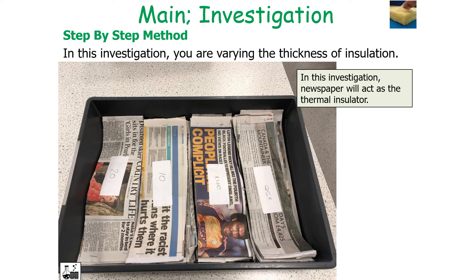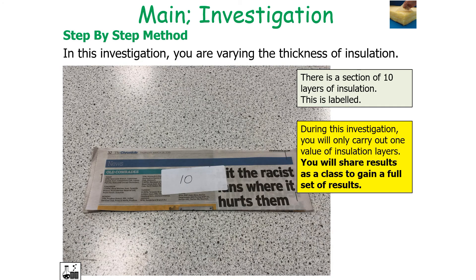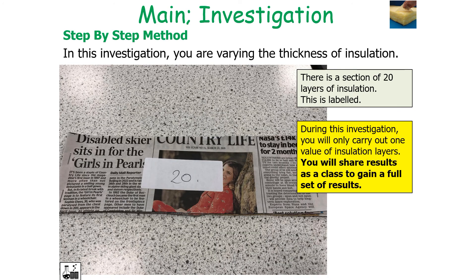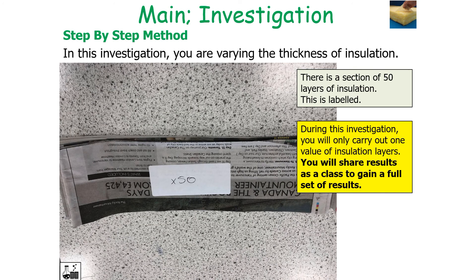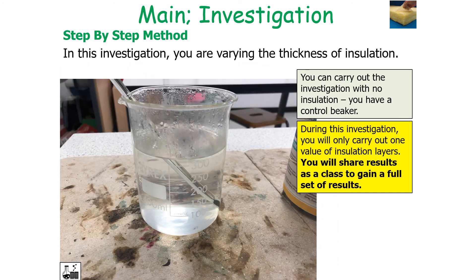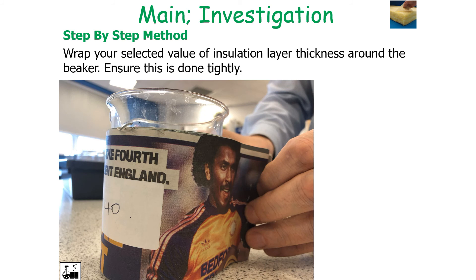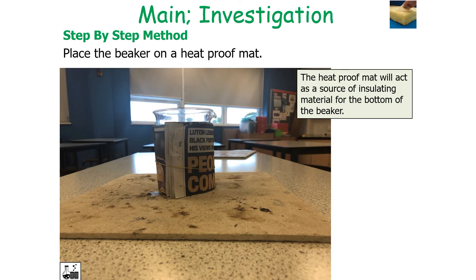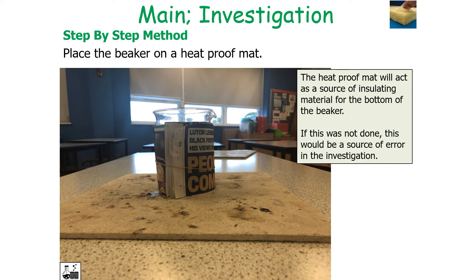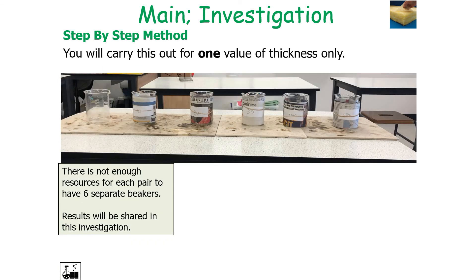In this investigation, you use varying thicknesses of newspaper insulation: 10, 20, 30, 40, and 50 layers, plus a control beaker with no insulation. Ideally you would share results as a class, as otherwise it would take too long. Wrap your selected insulation thickness tightly around a 400 ml beaker and secure with an elastic band. Place the beaker on a heatproof mat, which acts as insulation for the bottom of the beaker — if this was not done, it would be a source of error.